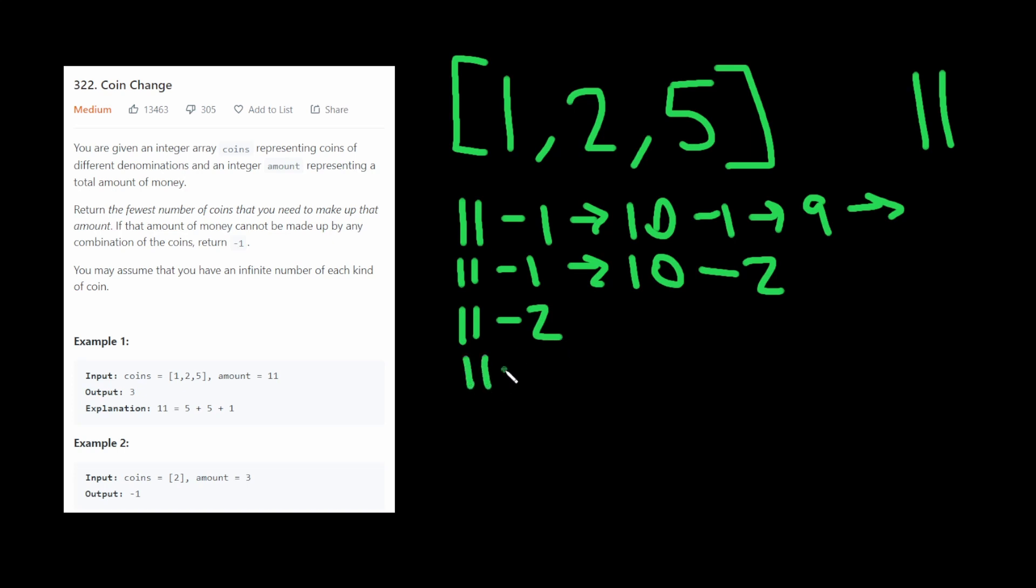And then we would do the same thing with 2, and then we do the same thing with 5. And of course, at each step, we would have to try every other possible coin. So you can see that this grows rather exponentially, and it would be a really slow algorithm.